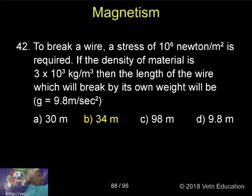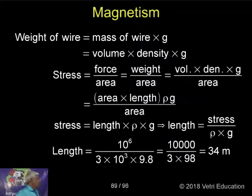There is a problem also here. This problem: weight of wire equals Mg. Mass per volume gives density, so mass equals volume times density.